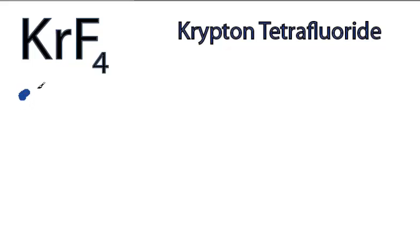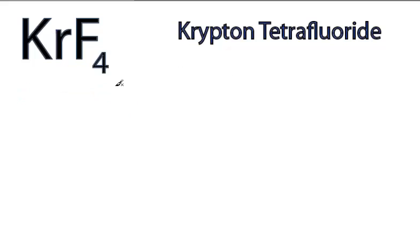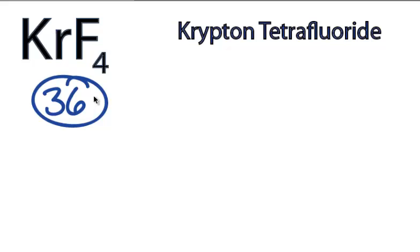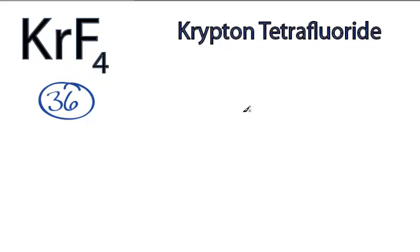This is the Lewis structure for KrF4, Krypton Tetrafluoride. For KrF4, we have a total of 36 valence electrons. Krypton is the least electronegative, so we'll put that at the center, and then we'll put the fluorines around it.